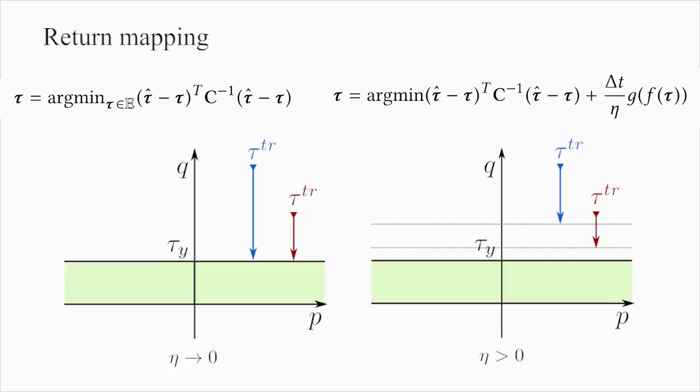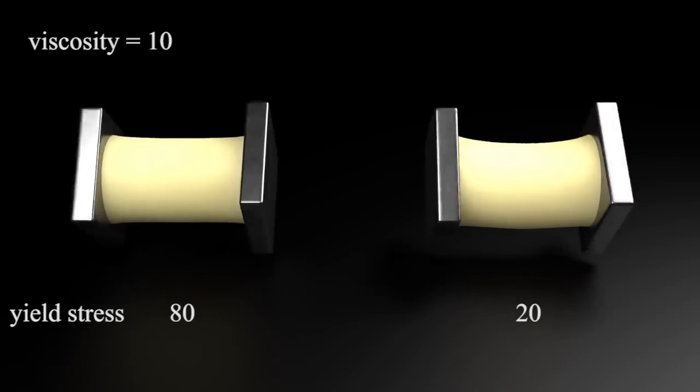Viscoplasticity replaces the hard constraint that the stress cannot be outside the yield surface to a penalty term instead. Instead of projecting the trial stresses back onto the yield surface, they are projected along the same directions but only a portion of the distance.